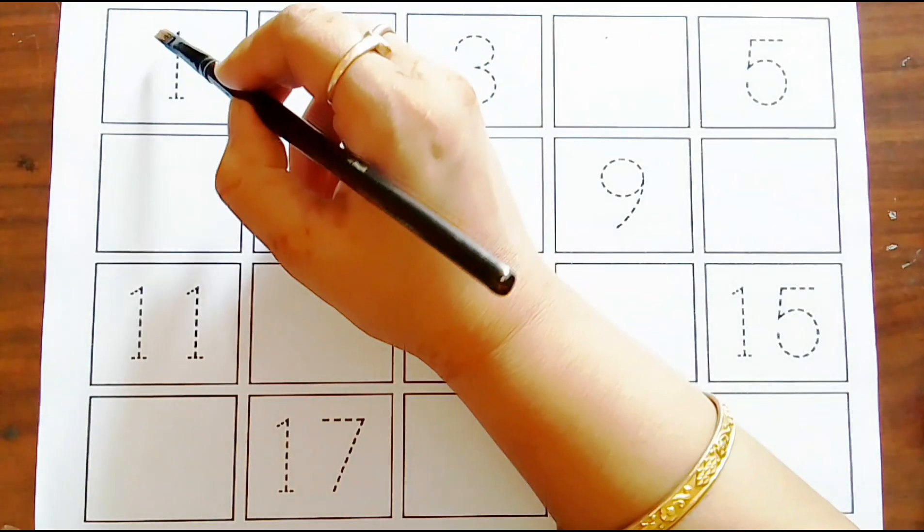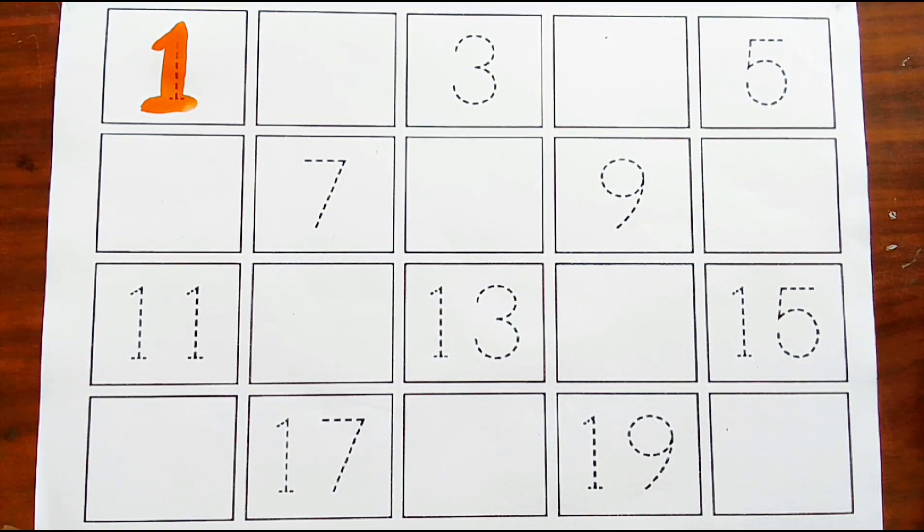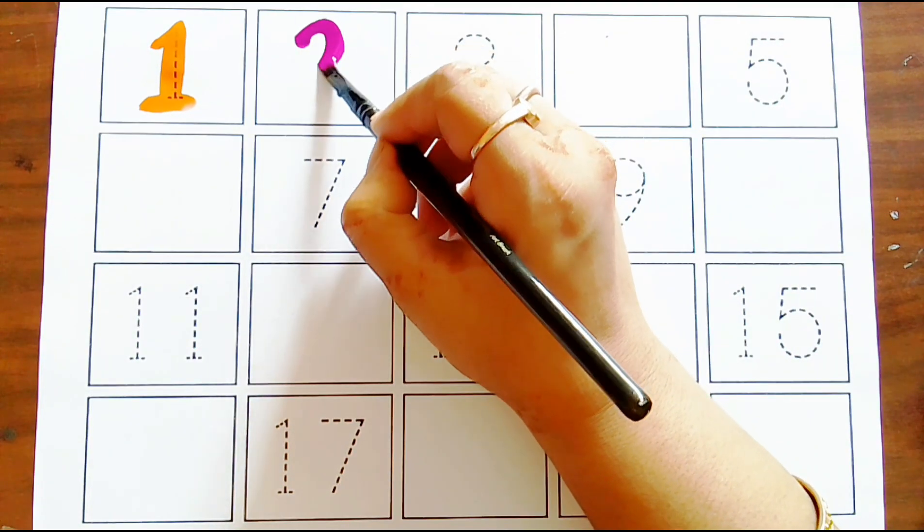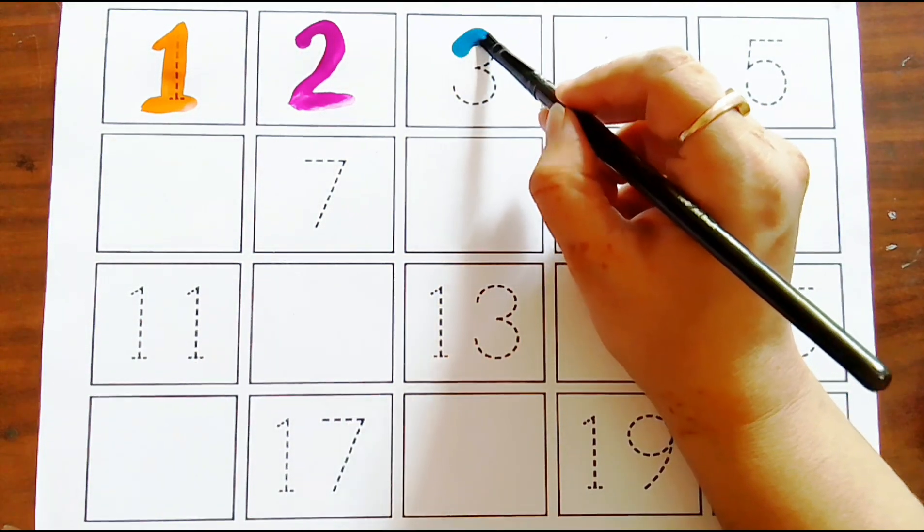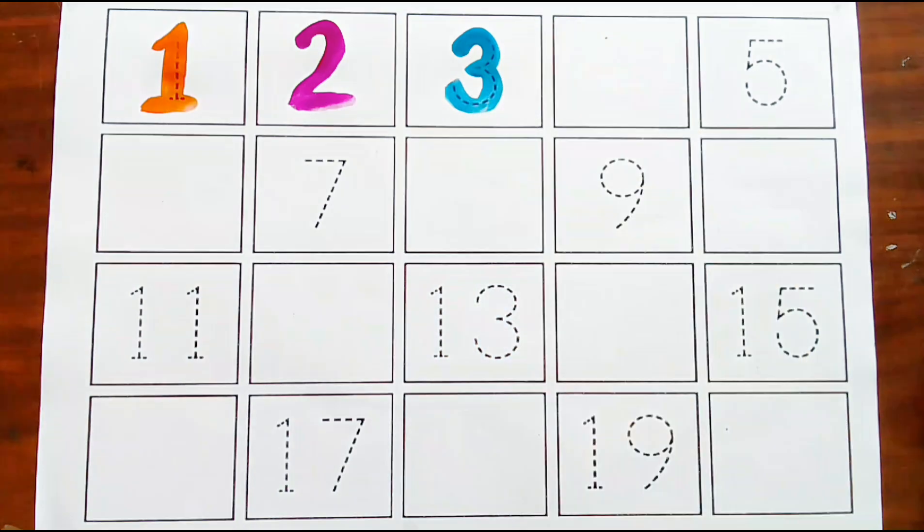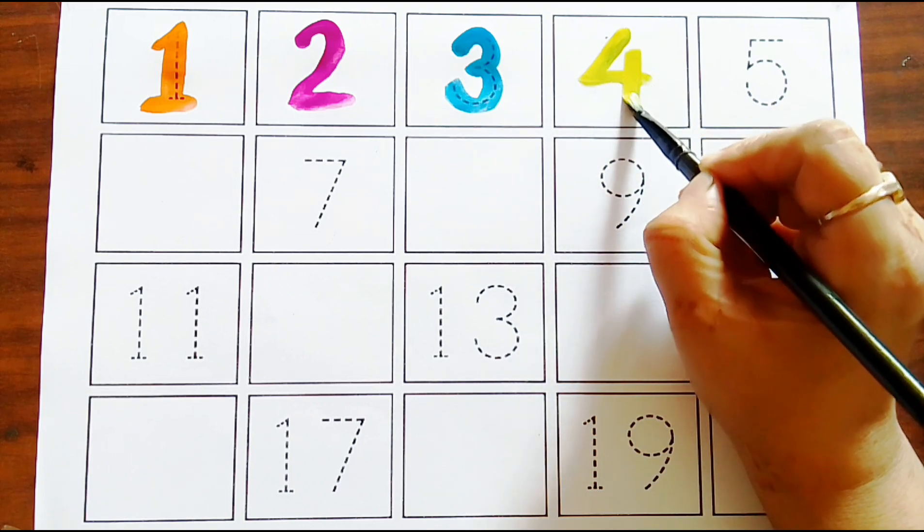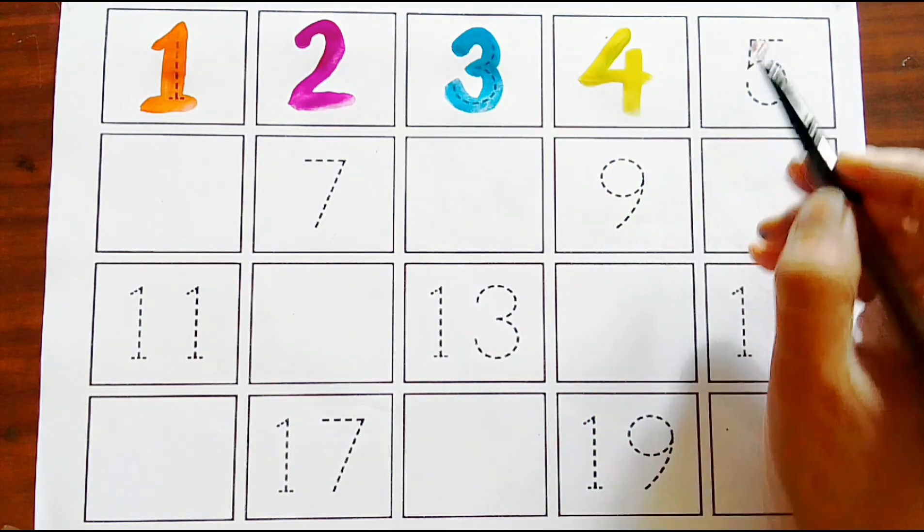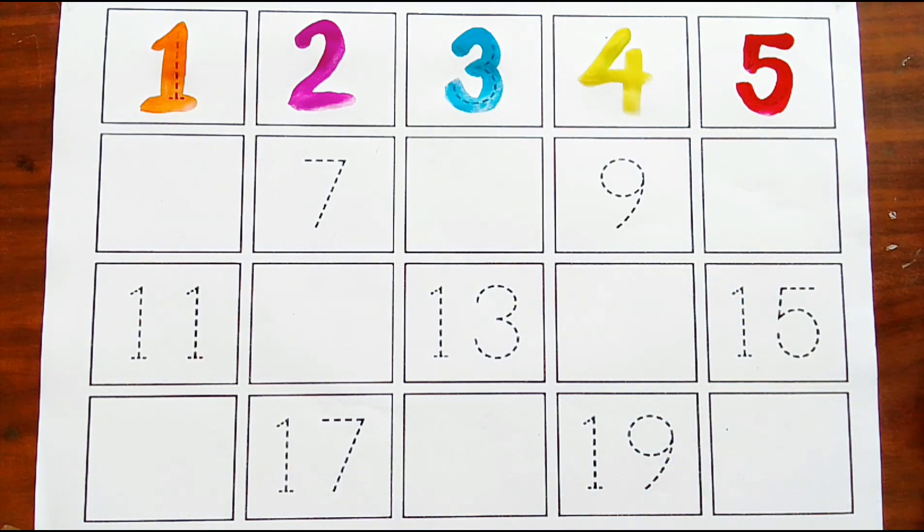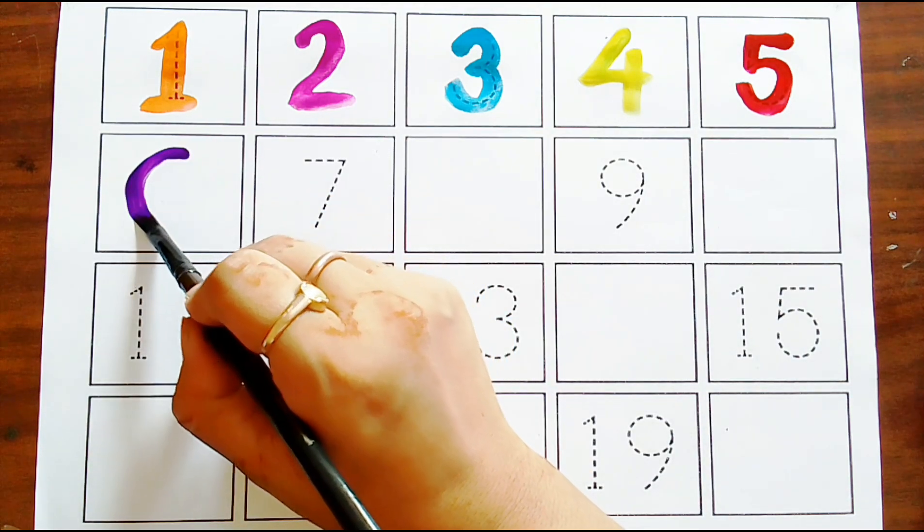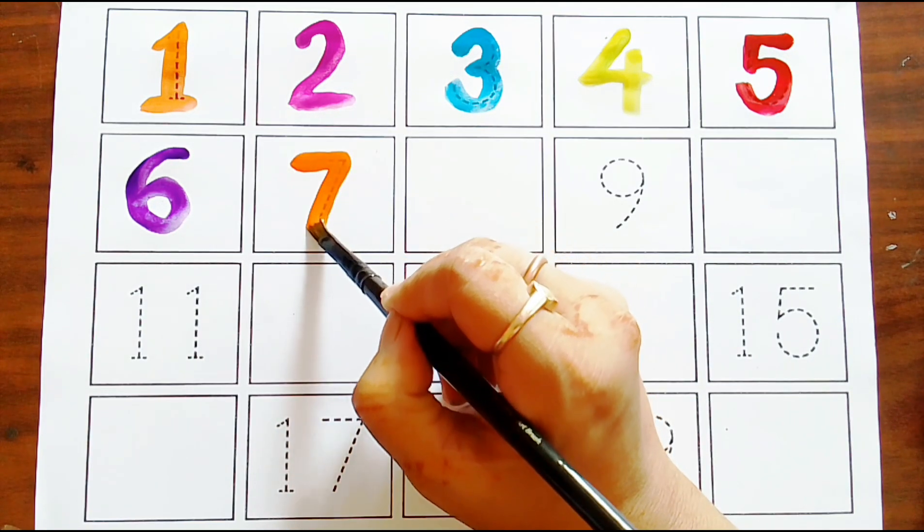Missing numbers. Orange color, one missing number. Two, purple color. Two, sky blue color. Three missing number, four yellow color. Four, red color. Five missing number. Six, violet color. Six, orange color. Seven.